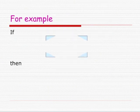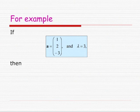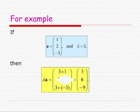For example, if A is (1, 2, −3) and lambda equals 3, then lambda·A is equal to 3×1, 3×2, 3×(−3), which is (3, 6, −9).